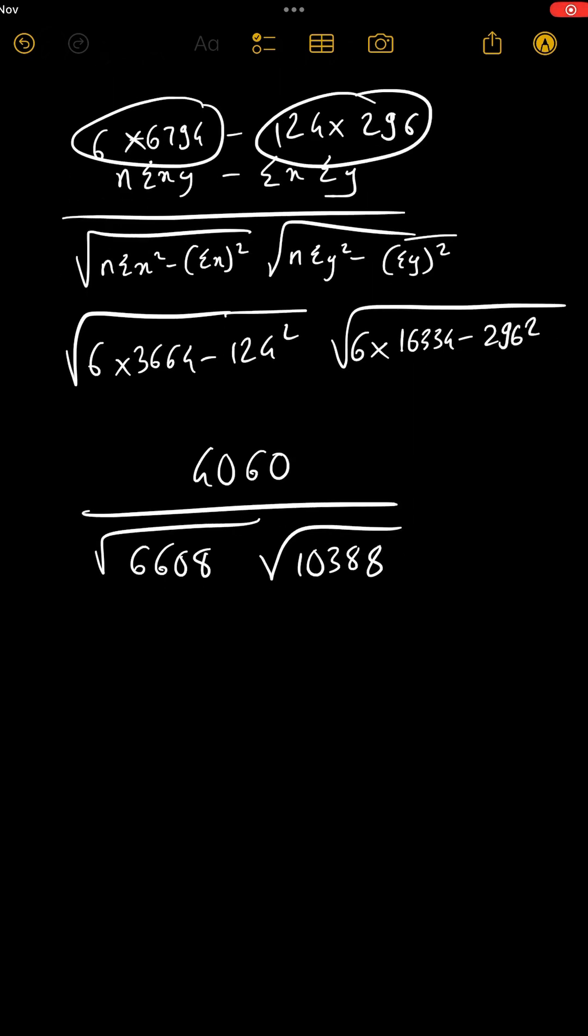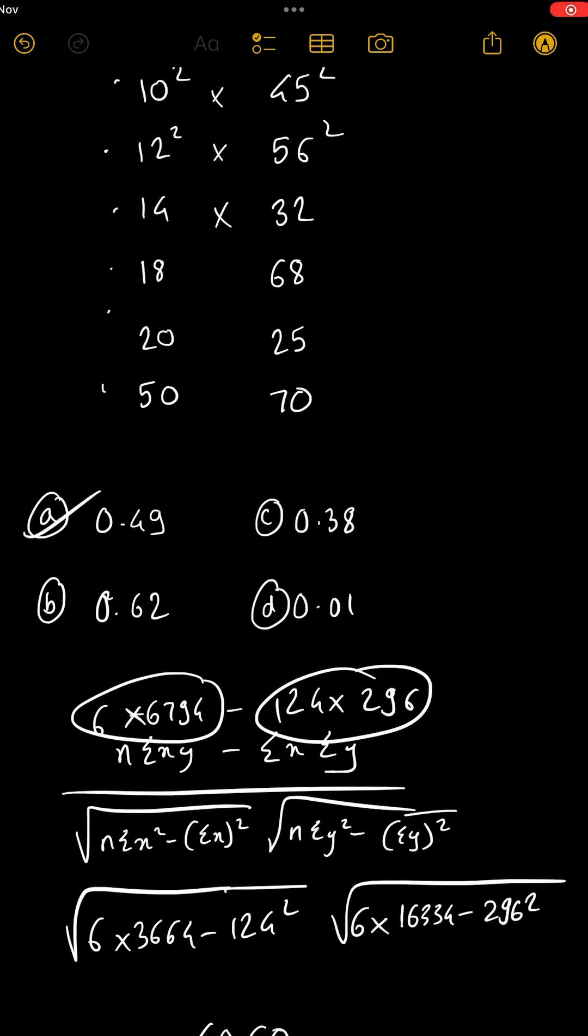So on your calculator you can just do 4060 divided by 6608 square root divided by 10388 square root. If you press equal to, you should get 0.4900 something, so option a is the correct answer.